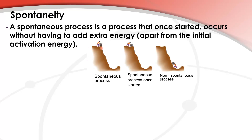We can use the analogy of rolling a boulder down a hill to illustrate the difference between a spontaneous and a non-spontaneous process. From our everyday experience, boulders tend to roll downhill. If the man lets the boulder go, it will roll down of its own accord to the bottom because of gravity — that's a spontaneous process.